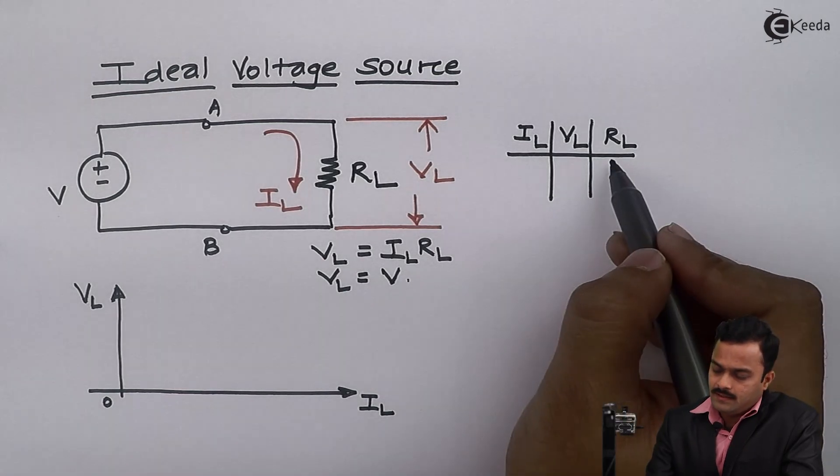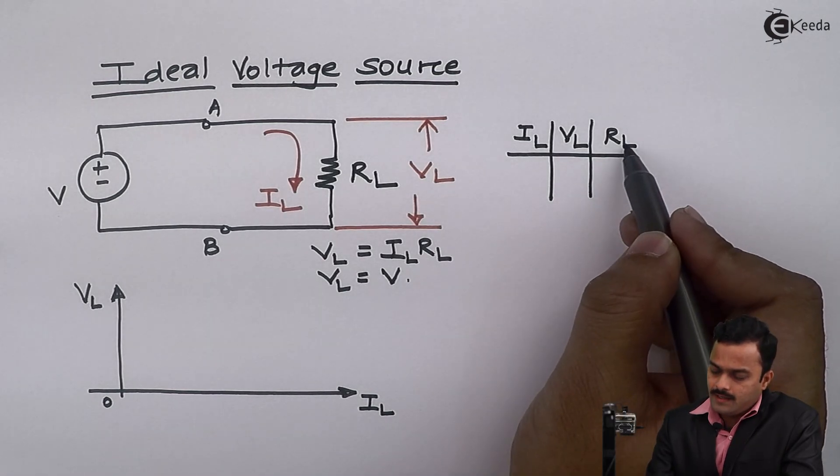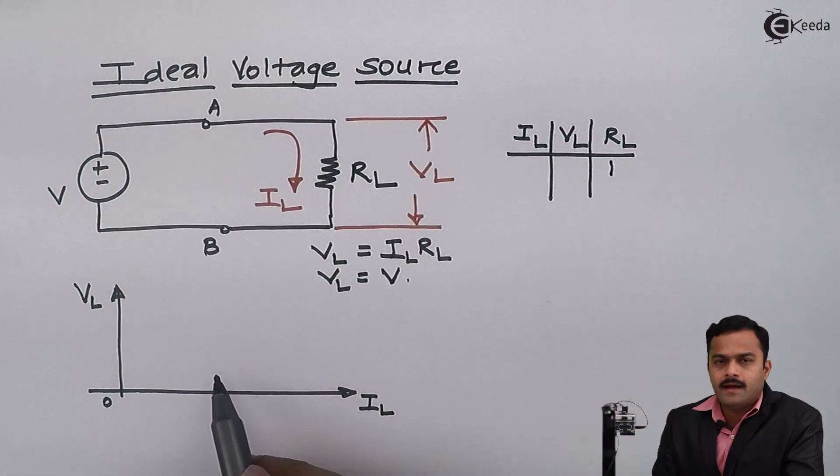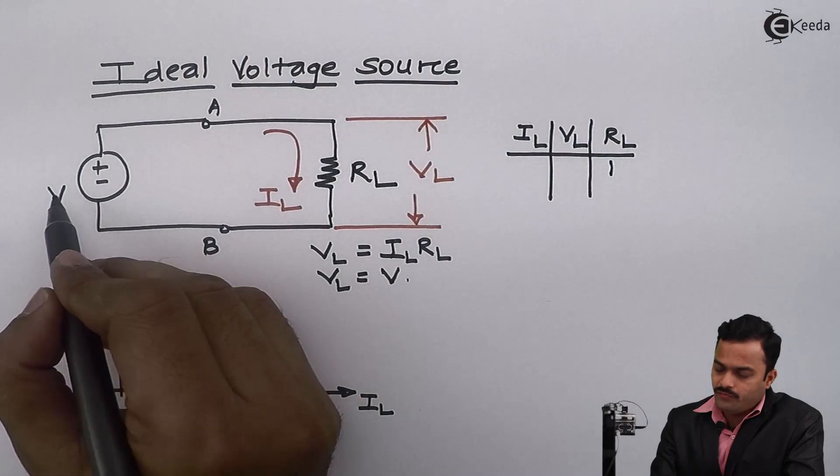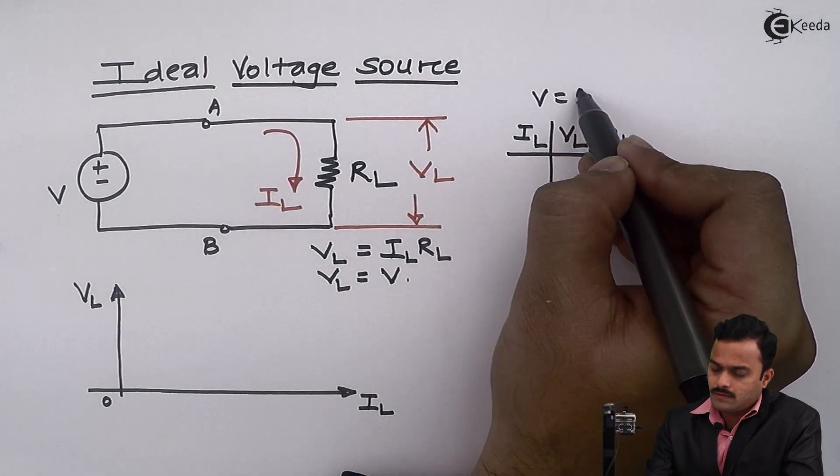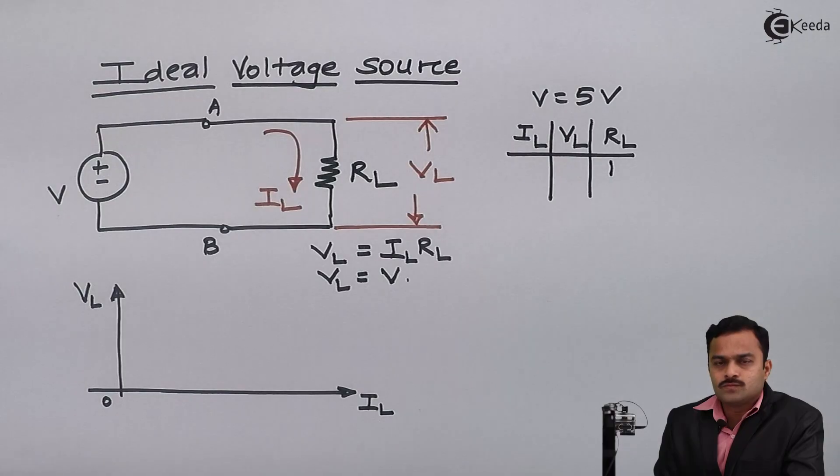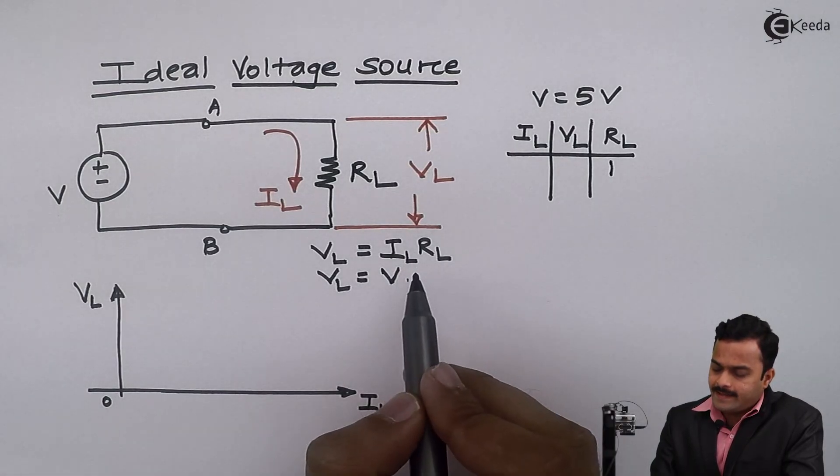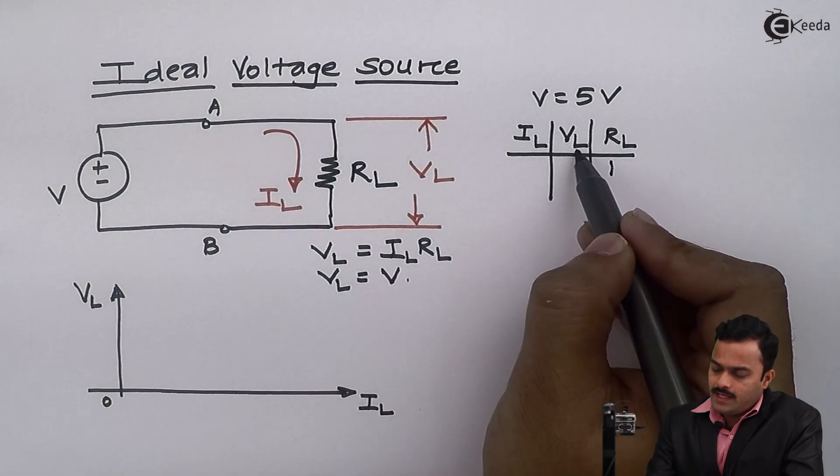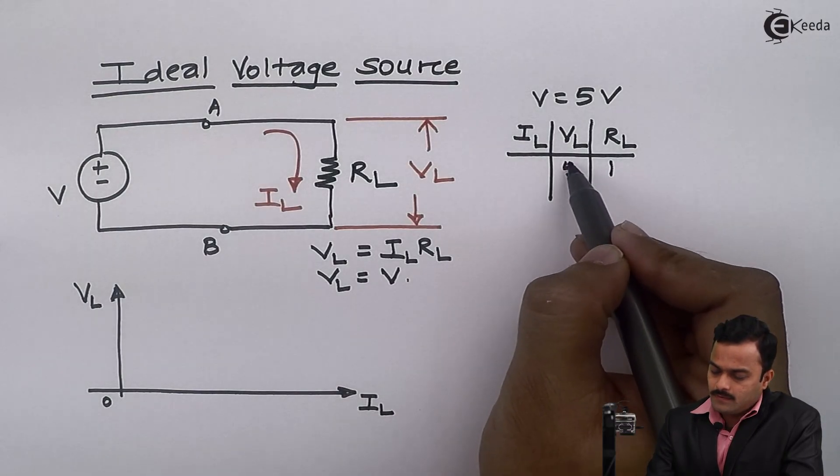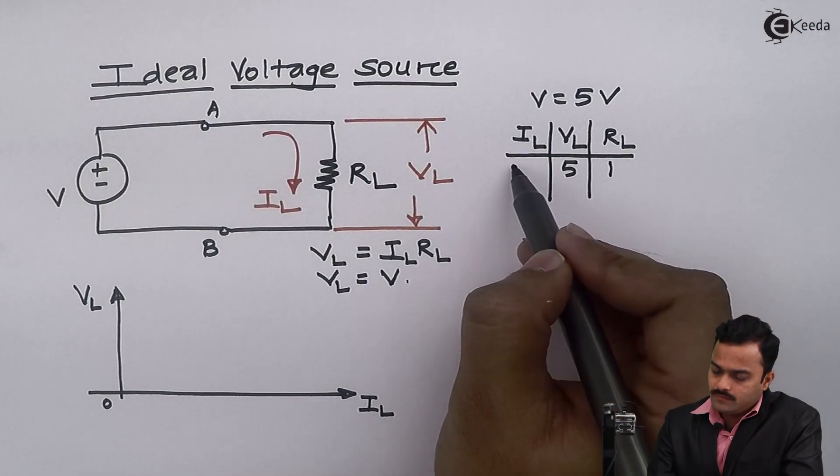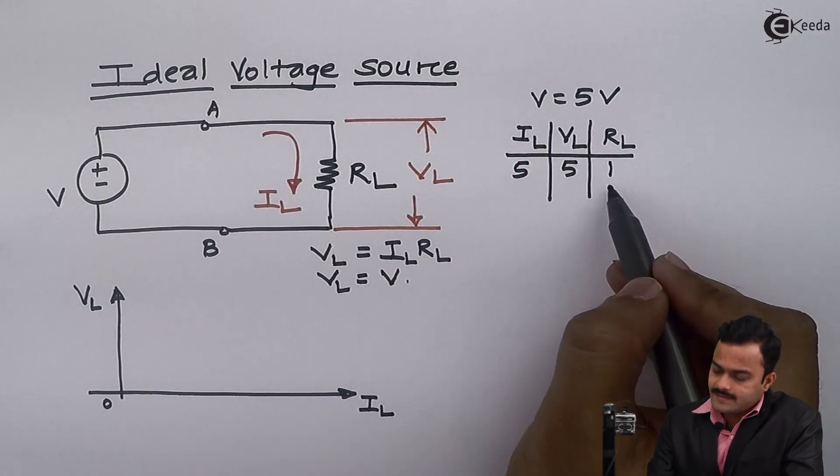Let's take RL as 1 ohm and I'm having this battery V of voltage say 5 volts. By using this equation, I can say VL will remain 5 volts, but IL will be 5 divided by 1, which is 5 ampere.